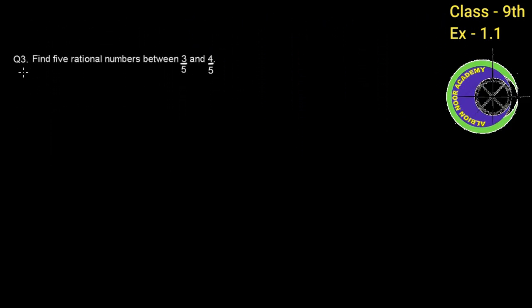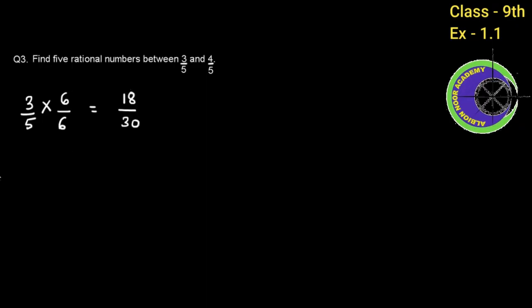Find 5 rational numbers between 3 by 5 and 4 by 5. We need 5 rational numbers between 3 by 5 and 4 by 5. Since we need 5, we multiply and divide by 6. Three sixes are 18 and five sixes are 30, so 3 by 5 becomes 18 by 30. Four by five multiplied by 6 by 6 gives 24 by 30. The denominator is now the same.